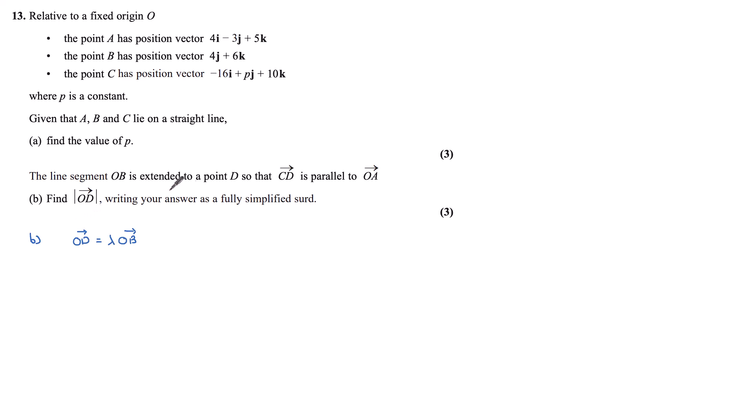Now, since OD is an extension of OB, then it is some multiple of OB. So I can write this as lambda OB. Again from our position vector, OB is (0, 4, 6). Multiplying through by my lambda gives me a vector for OD of (0, 4λ, 6λ).